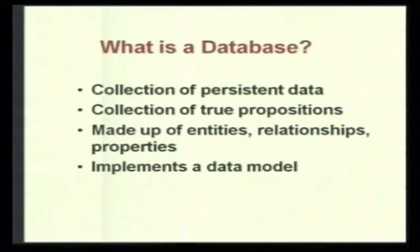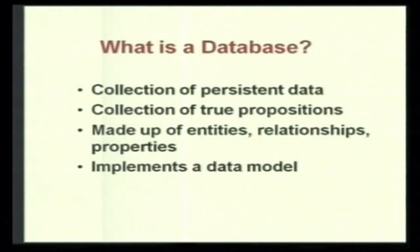A database is a collection of persistent data — data that exists and is physically stored. It is a collection of true propositions: whatever you put in a database is supposed to be true for that particular organization. It is made up of entities, relationships, and properties. For example, a student can be an entity, a course can be an entity, the student undergoes the course is the relationship, and properties are the student's name, address, the course name, and its code number.